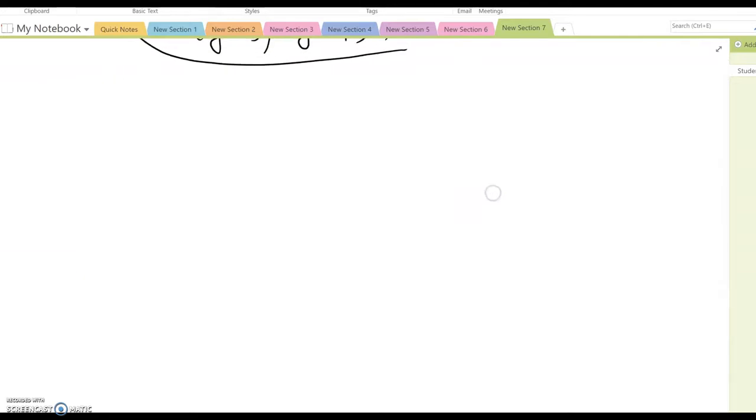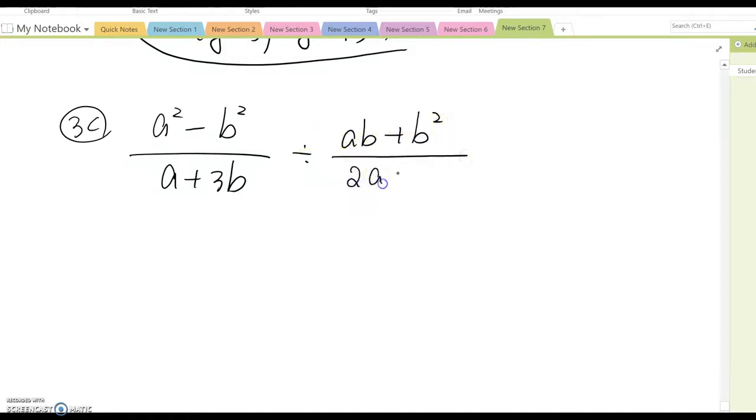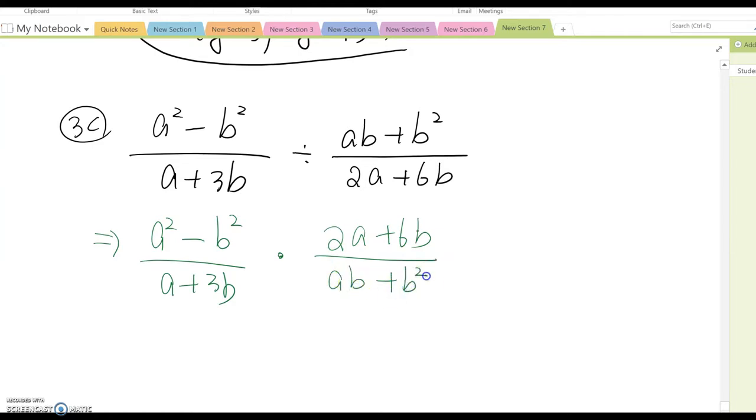What about the division case? Such as (a² - b²) over (a + 3b), divided by (ab + b²) over (2a + 6b). You can rewrite this first using multiplication. Then (a² - b²) over (a + 3b), and we switch, so the multiplication becomes (2a + 6b) over (ab + b²).